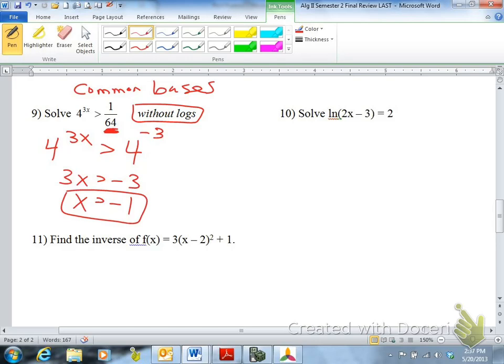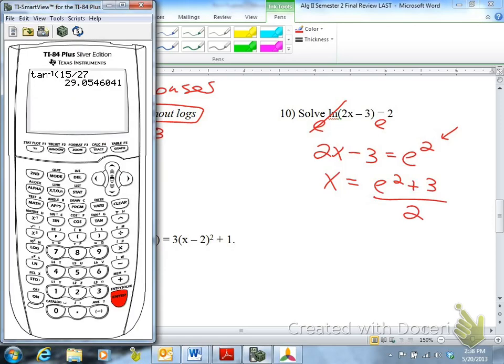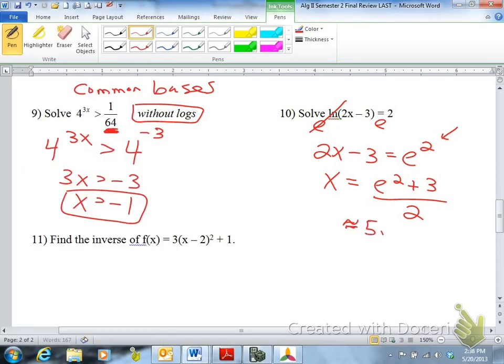The next one is a natural log. So you do the inverse operation, which you e both sides. e and ln cancel. You have 2x minus 3 equals e squared. Notice this is an exponent of 2. It's not e times 2. It's e squared. And then you would solve for x, so you would add 3 and divide by 2. And you should get the actual answer for that, which is e squared plus 3 divided by 2. So 5.1945. Approximately 5.1945.